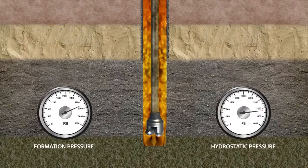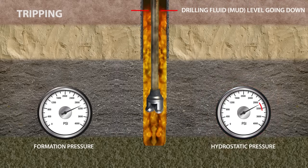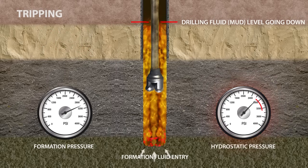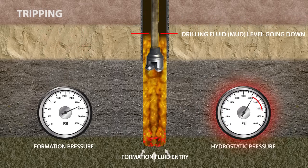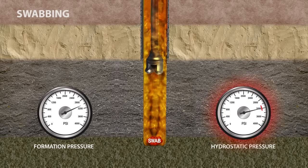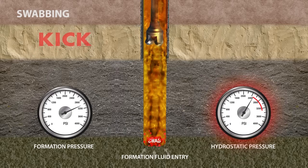While tripping, if there is a failure to keep the hole full of mud to maintain adequate hydrostatic head, the hydrostatic pressure will be less than the formation pressure, inducing a kick. Swabbing, while pulling out of a hole too fast, can produce a suction effect, resulting in a decrease in the bottom hole pressure large enough to allow formation fluids to enter the wellbore, creating a kick.